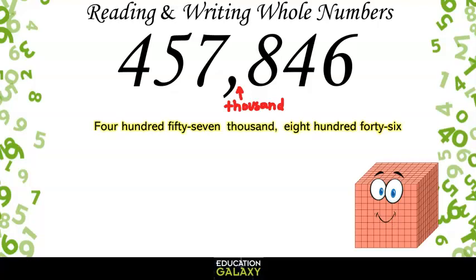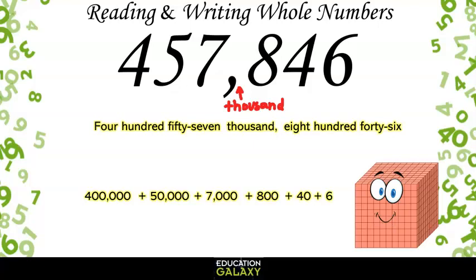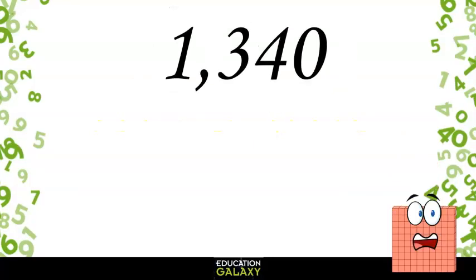To write it in expanded form, we write what each digit is worth. The 4 in the hundred thousands place is 400,000. Plus the 5 in the ten thousands place would represent 50,000. Plus the 7 in the thousands place is 7,000. The 8 in the hundreds place is 800. Plus the 4 in the tens place is 40. And the 6 in the ones place is 6. We get 400,000 plus 50,000 plus 7,000 plus 800 plus 40 plus 6.